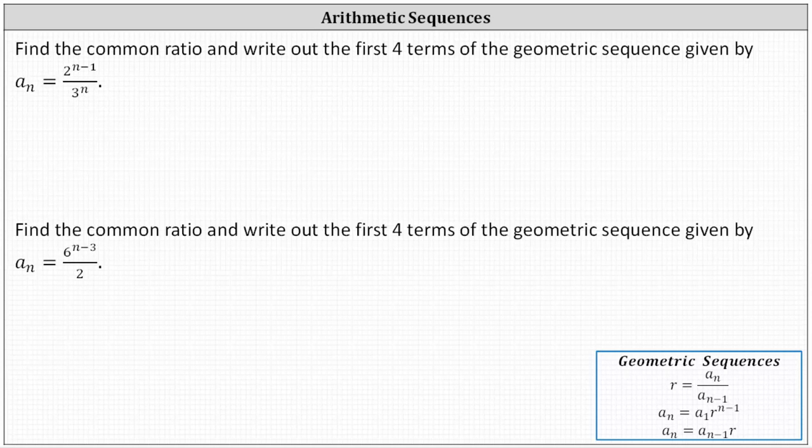We're asked to find the common ratio and write out the first four terms of the geometric sequence given by a sub n equals two to the power of n minus one, divided by three to the power of n. Let's find the first four terms and then find the common ratio.